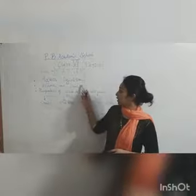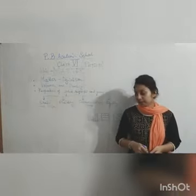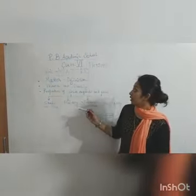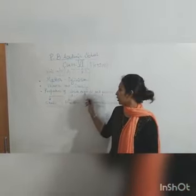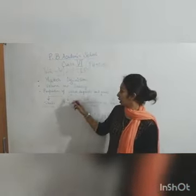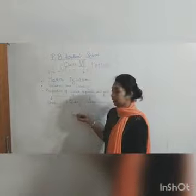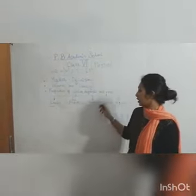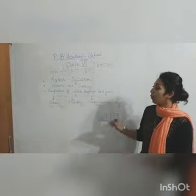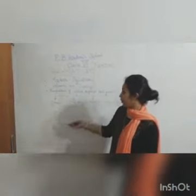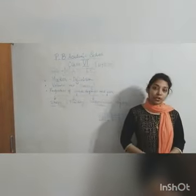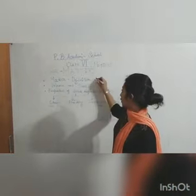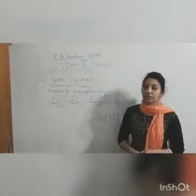The first subtopic will be the definition of matter. The second part will be volume and density. Then the three states of matter — solid, liquid and gas. Based on the three states of matter, we define them in terms of shape, size, fluidity, intermolecular space, and rigidity. These are the properties by which we can distinguish between solids, liquids and gases. So first, we are going to do the definition of matter.